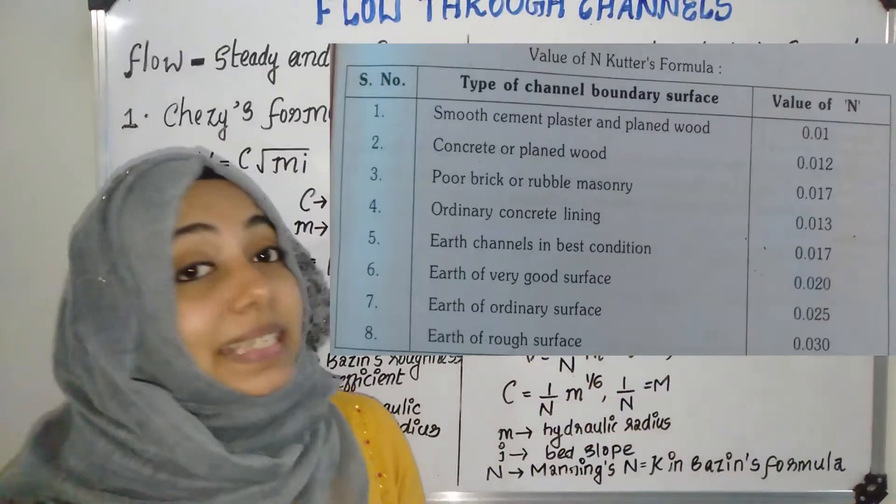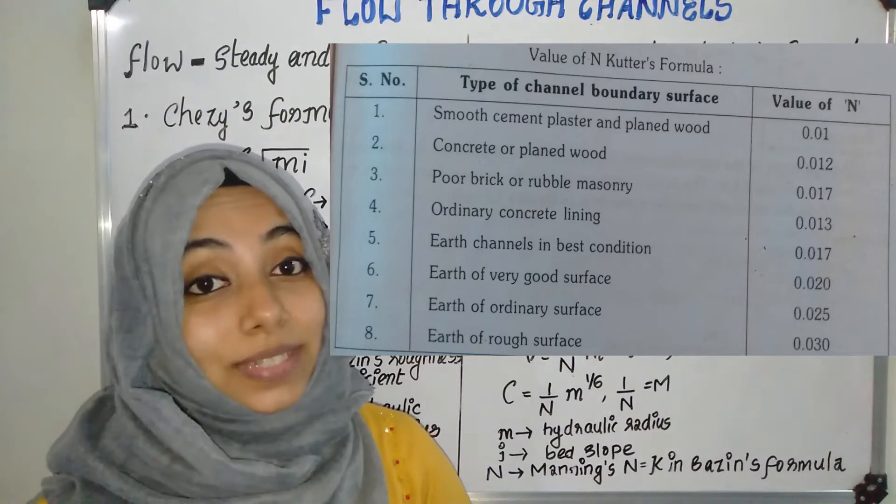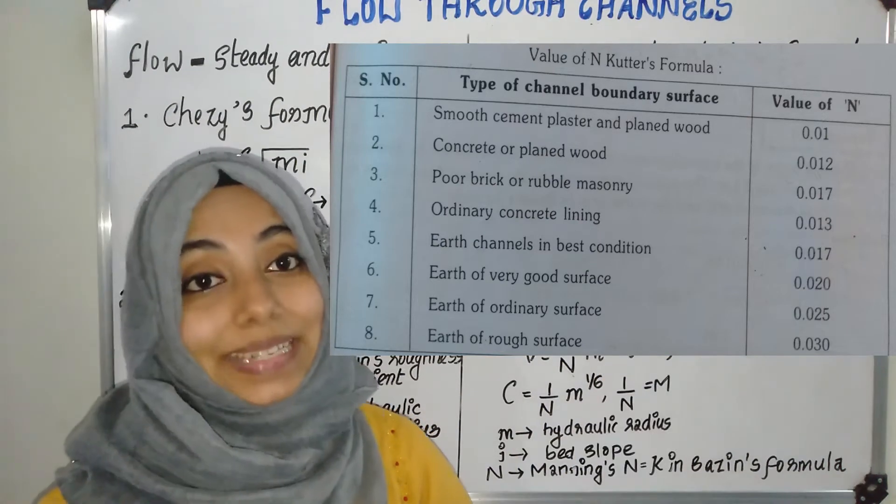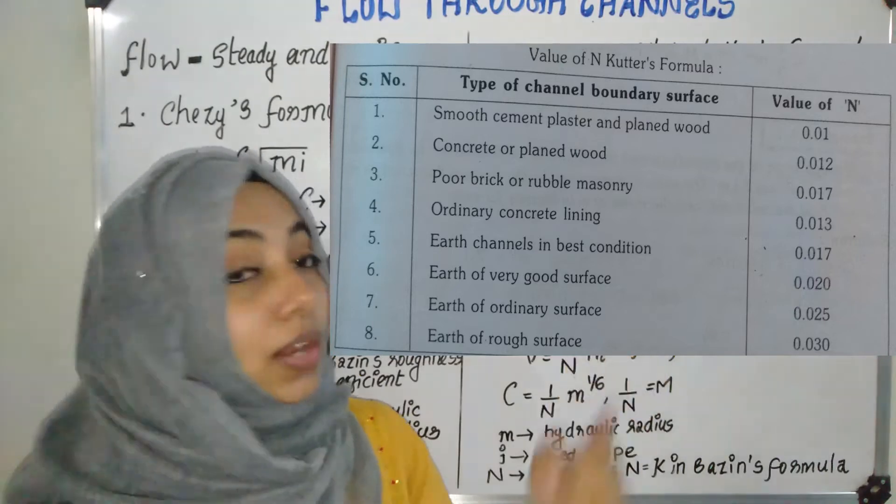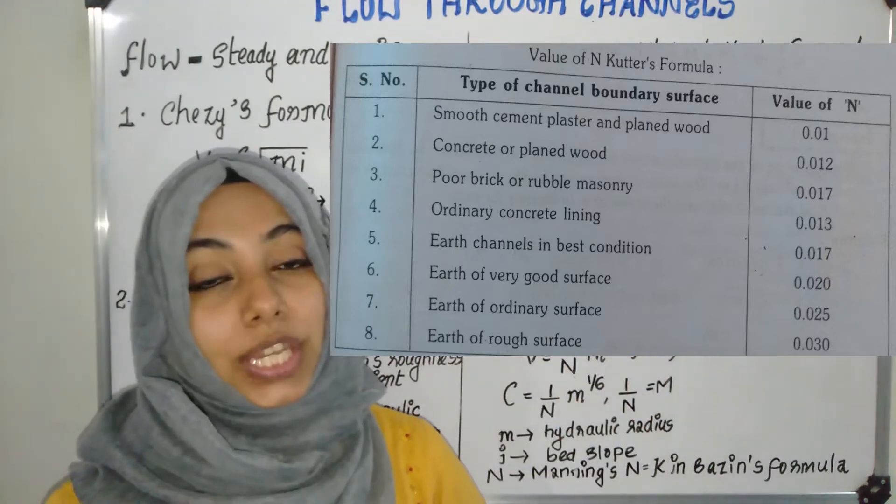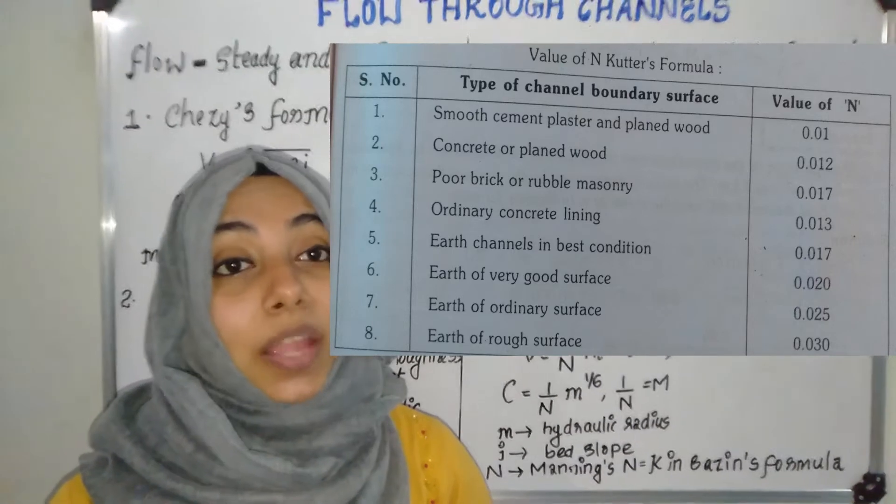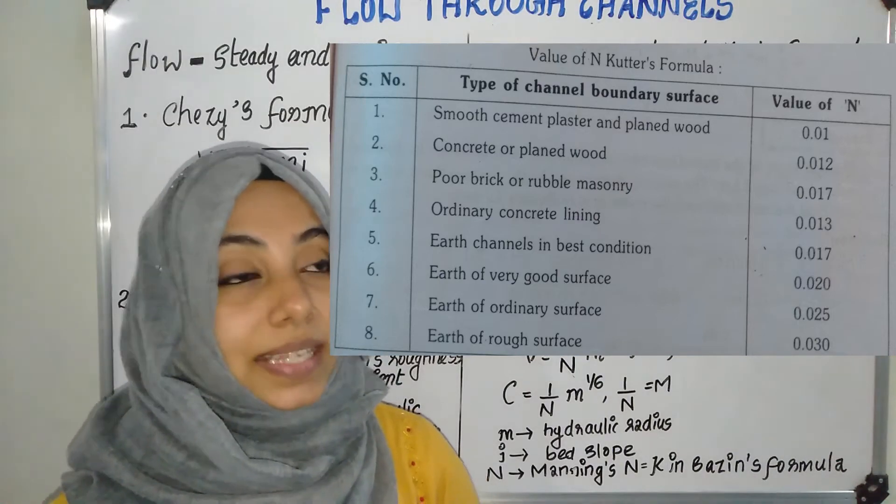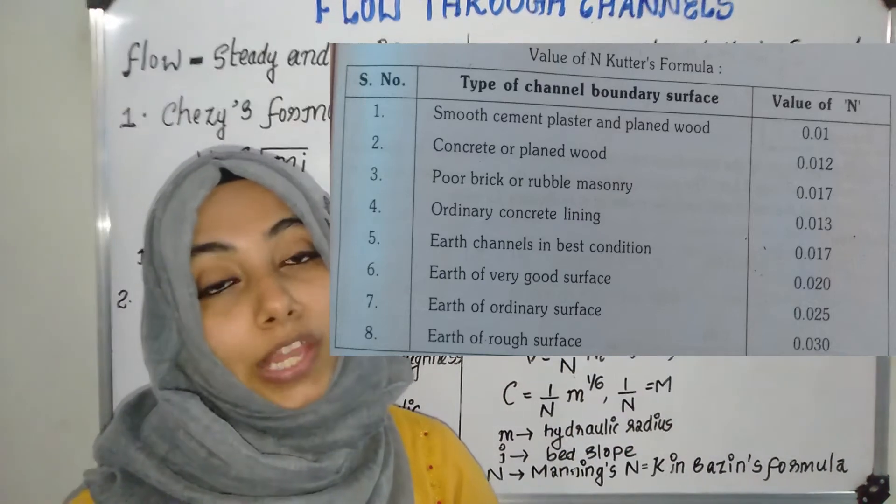Here is a tabular column which gives the values of Kutter's coefficient with different channel boundary surface conditions and their N values.